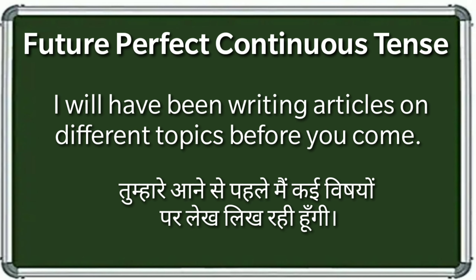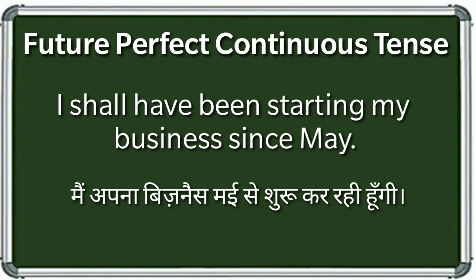चौथा example: तुम्हारे आने से पहले मैं कई विशियों पर लेख लिख रही होंगी — I will have been writing articles on different topics before you come. पाँचवाँ example: मैं अपना business मई से शुरू कर रही होंगी — I shall have been starting my business since May. यहाँ पर बताना जरूरी है कि जब subject I या We हो तो will use न किया जाकर shall use किया जाता है.